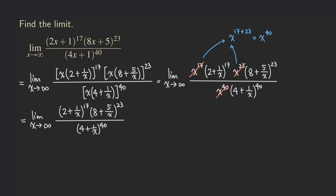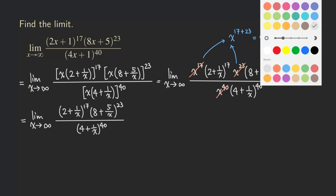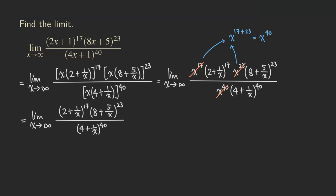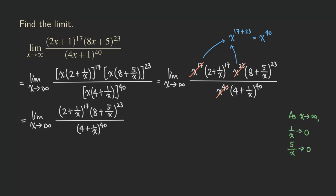This still looks complicated, but there are a few notes to point out: as x approaches infinity, 1/x approaches 0, because when x gets large, you have 1 divided by a number that's getting larger and larger, so the fraction gets smaller and smaller. Same thing for 5/x — that fraction is also approaching 0.